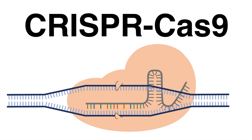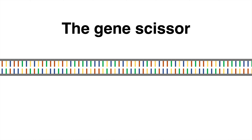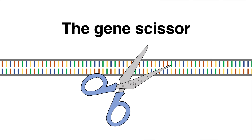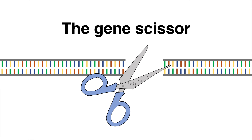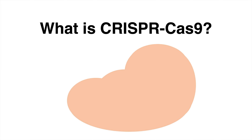CRISPR-Cas9 is a novel molecular tool modified to allow precise gene editing. CRISPR, often referred to as the gene scissor, can cause targeted double-strand breaks in a specific sequence of the genome.